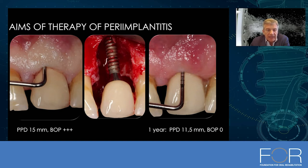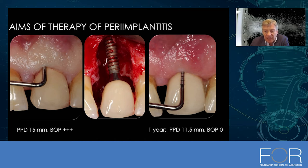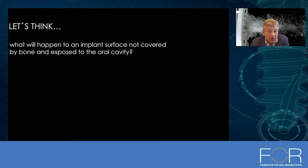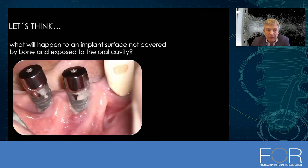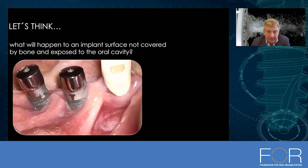What will happen to a rough surface exposed to the oral cavity over time, and for how long does the patient expect us to solve the problem? We had a severe bleeding and pocketing and we did cleaning with a classical approach. We achieved a reduction of probing depth and after one year had no pus and no bleeding — but finally we had to remove these implants.